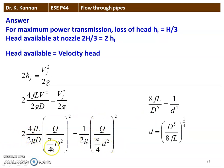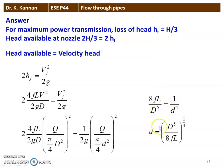Simplifying — 2G cancels — giving 8FL/D⁵ = 1/d⁴. Here Q² cancels and (π/4)² cancels. We get 8FL/D⁵ = 1/d⁴, so the diameter of the nozzle d = (D⁵/8FL)^(1/4). We have a pipeline and at the end of the pipeline we have a nozzle; this formula gives the nozzle diameter for maximum power transmission.